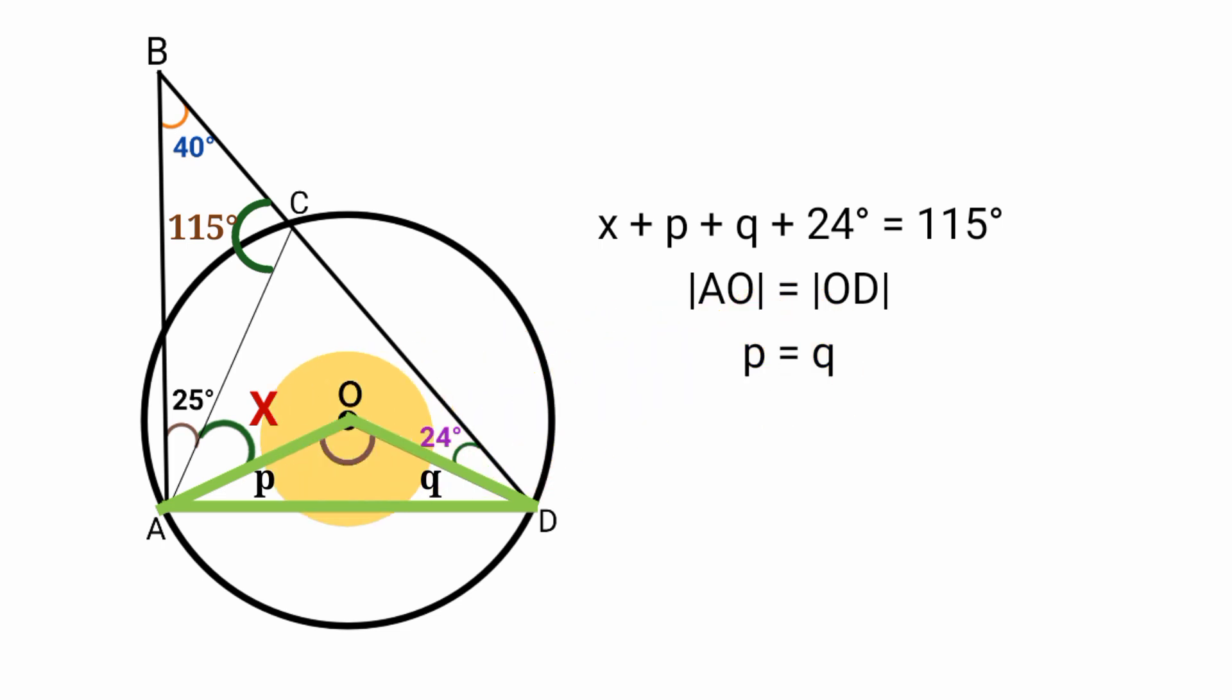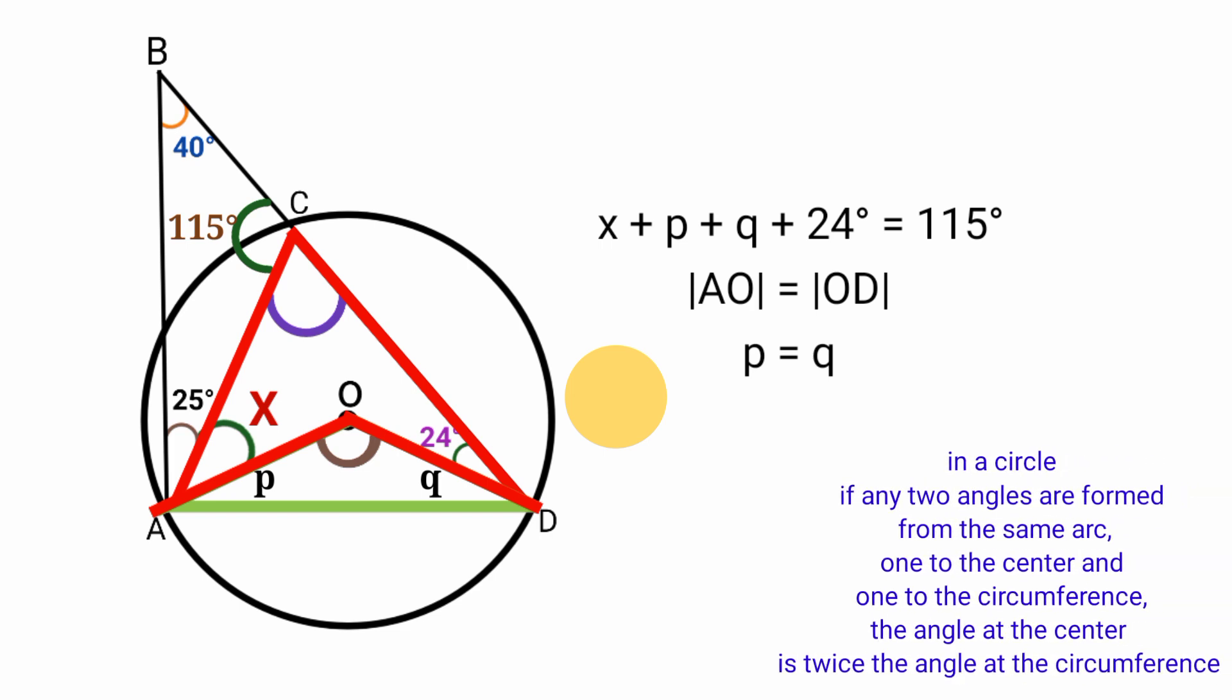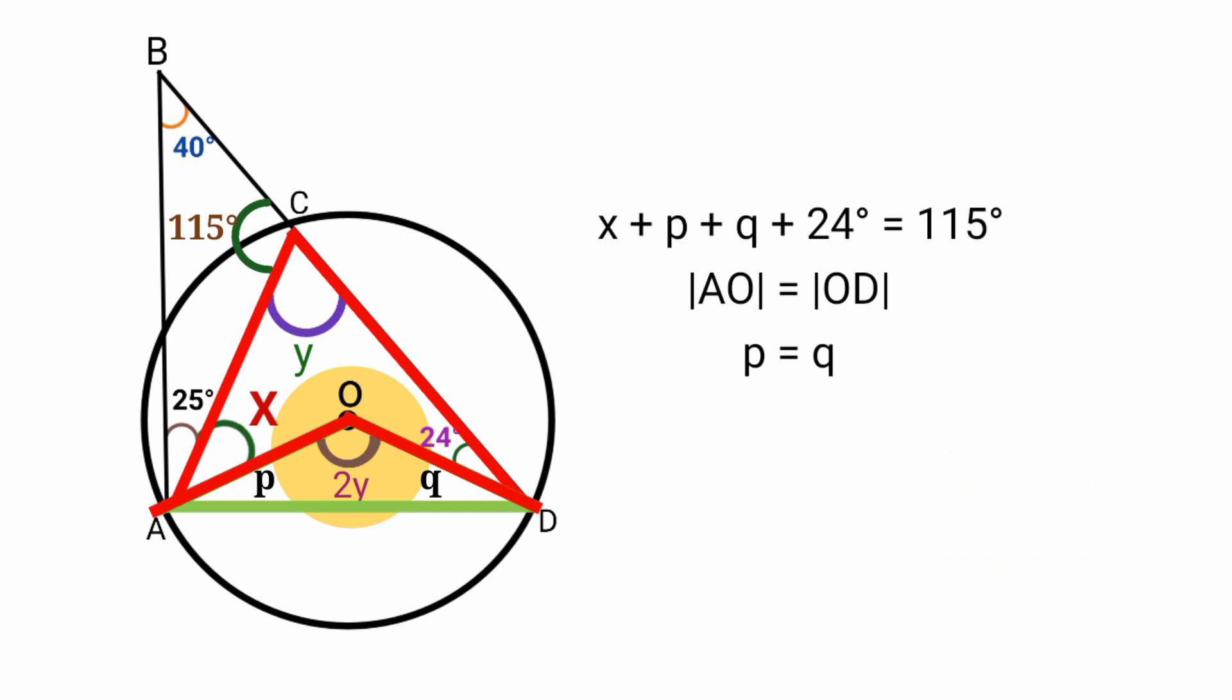So to find the size of angle P and angle Q, we need the size of this angle here. If you look at this angle and this angle, you will notice that both are formed from the same arc, one to the center of the circle and the other to the circumference of the circle. Recall in a circle, if any two angles are formed from the same arc, one to the center and the other to the circumference, the size of the angle formed at the center is twice the size of the angle formed at the circumference. So that means if this angle here is Y, this must be equal to 2Y. But what is the value of angle Y?